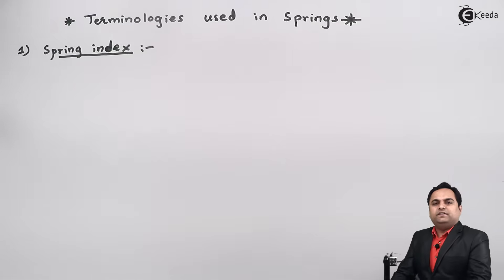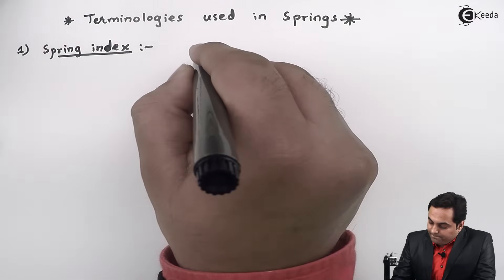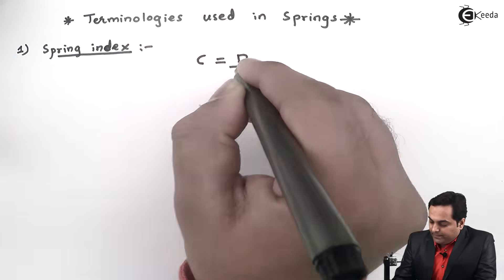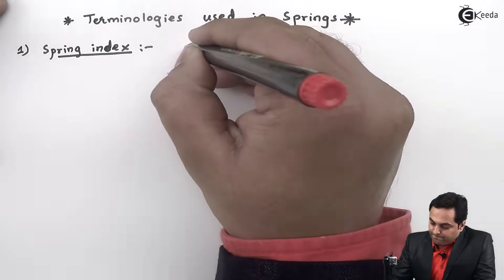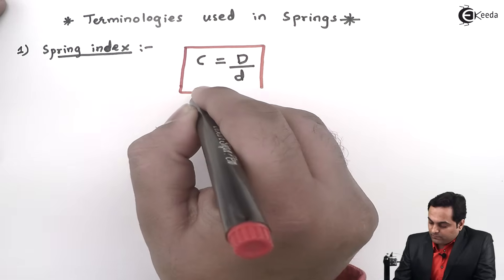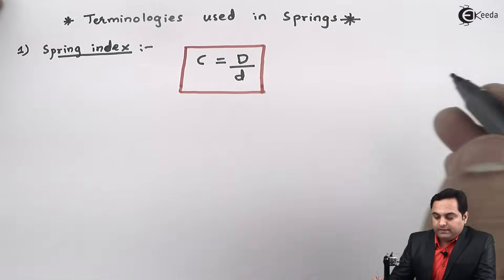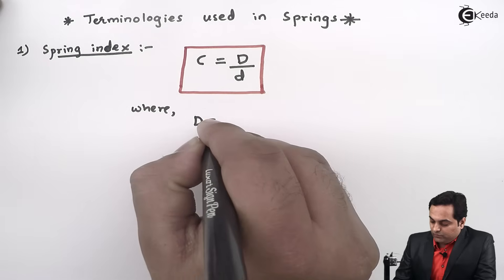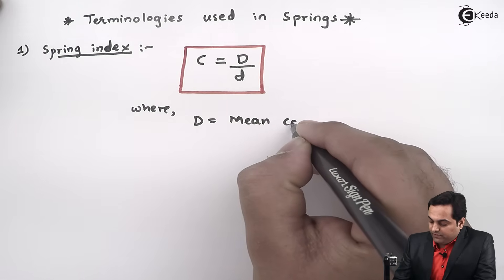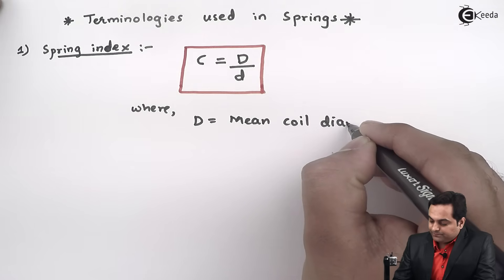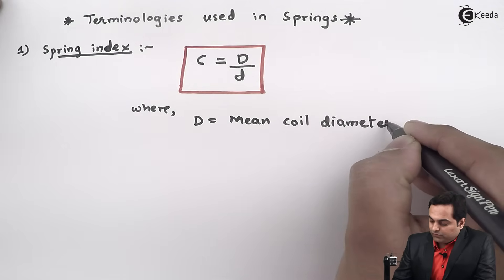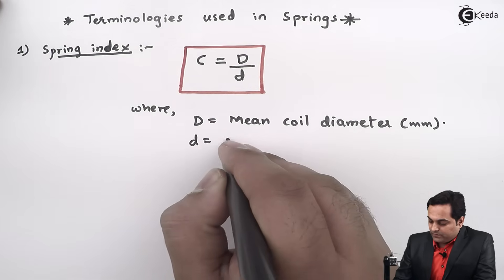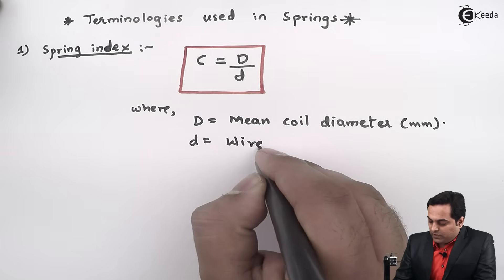Spring index is given by capital C. It is equal to capital D upon small d, where capital D is the mean coil diameter with unit mm, and small d is the wire diameter.